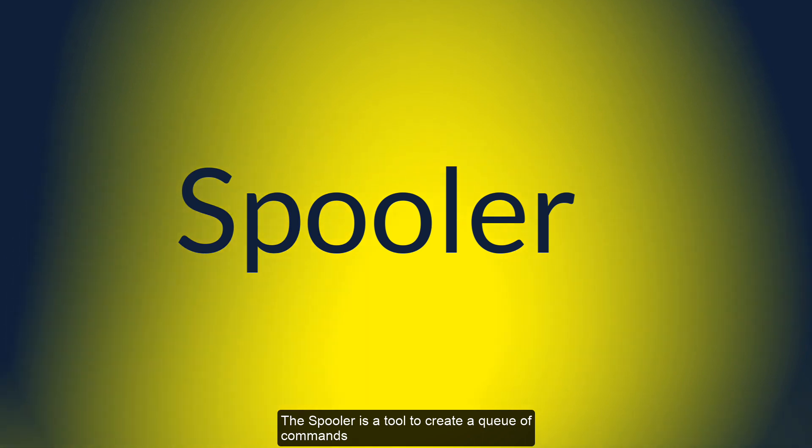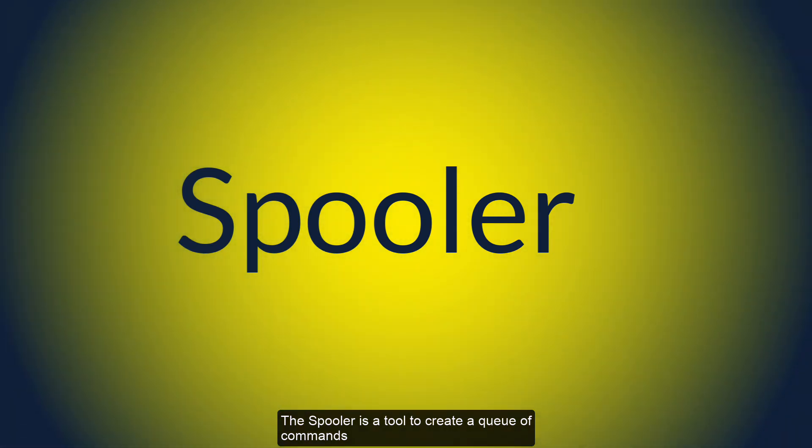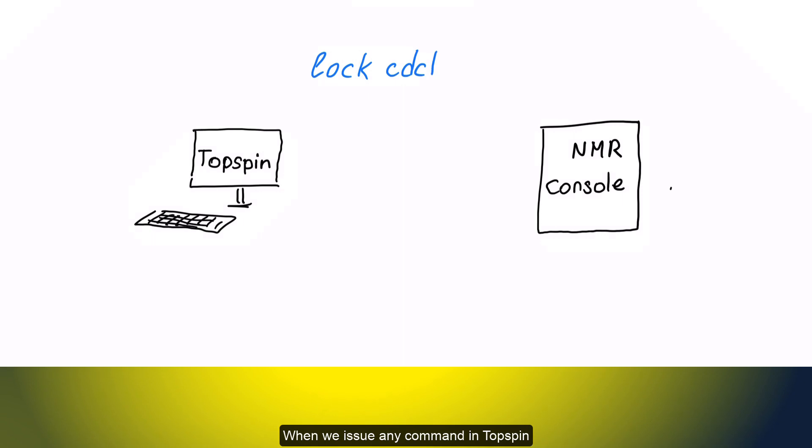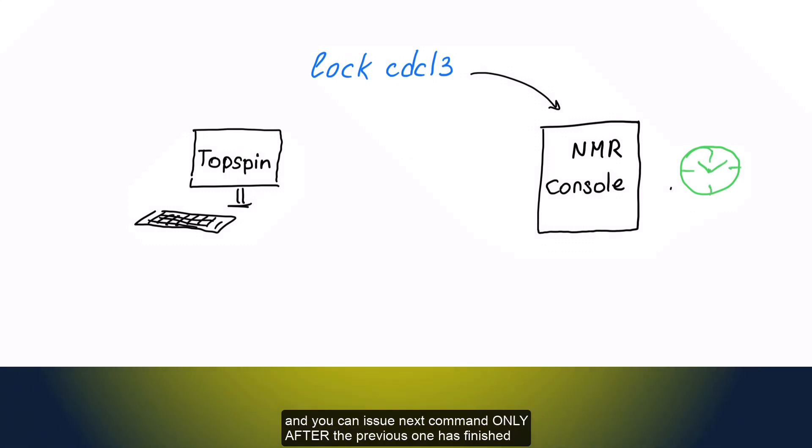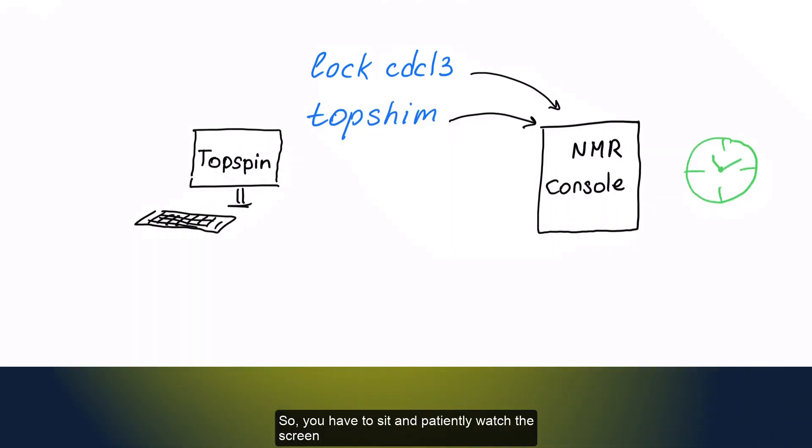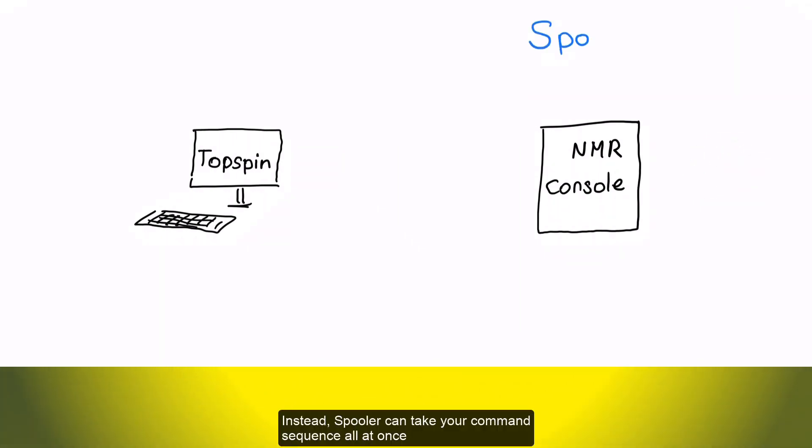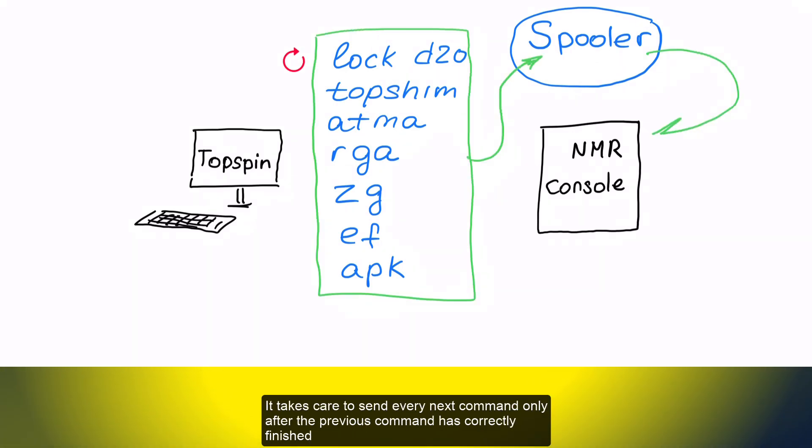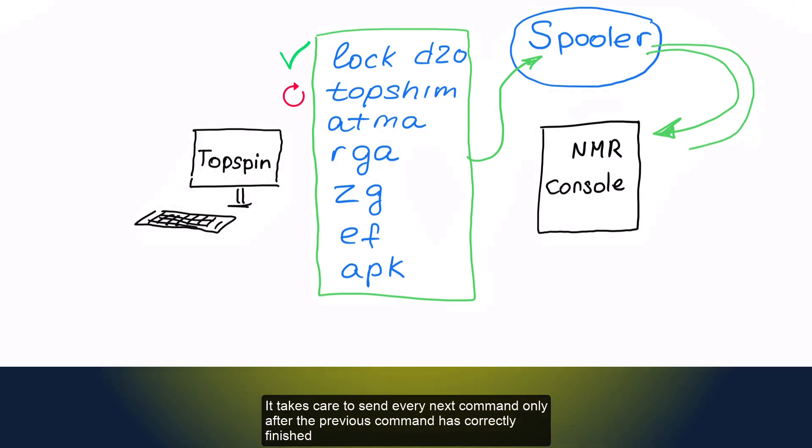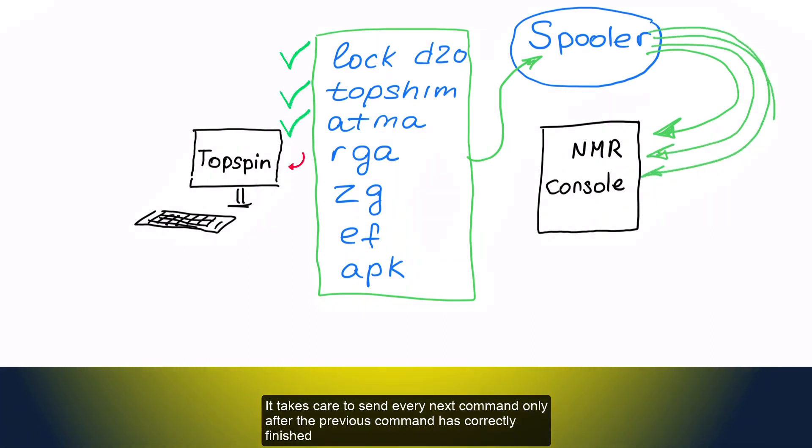The spooler is a tool to create a queue of commands. When we issue any command in Topspin, it is sent to NMR console directly. After it receives the command, it is busy for some period of time, and you can issue next command only after the previous one has finished. So you have to sit and patiently watch the screen. Instead, a spooler can take your command sequence all at once and submit your commands to the console one by one. It takes care to send every next command only after the previous command has correctly finished.